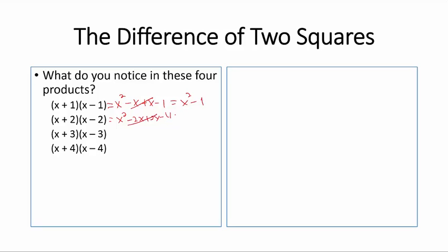the two middle terms collapse and you get x squared minus 4. Here you get x squared minus 3x plus 3x minus 9. The middle terms collapse. This is x squared minus 9.